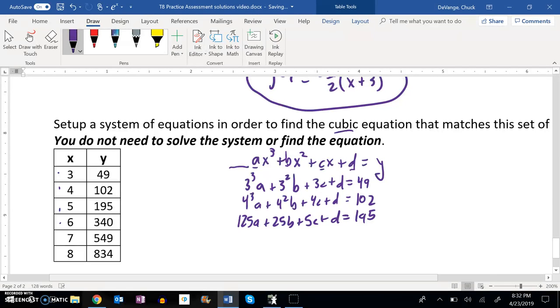And if I plug in the 6, 6³ is 216a plus 6², 36b, plus 6c plus d, and 6 is associated with 340.